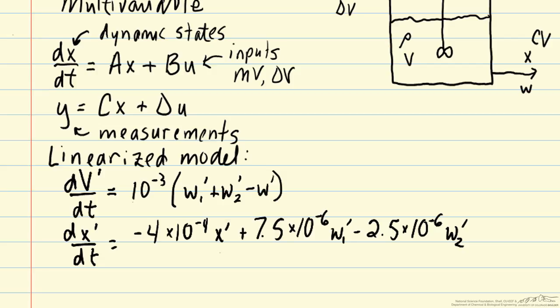The first thing to do in rewriting it into the state space form is to determine what are the vectors X, U, and Y. And here it's important to keep in mind that X is this sort of generic variable for our dynamic states, it's not actually the mass fraction. But here it should be clear as we go through the notation because our mass fraction is in deviation variables, so that will be referred to as X prime.